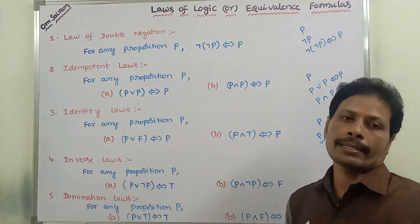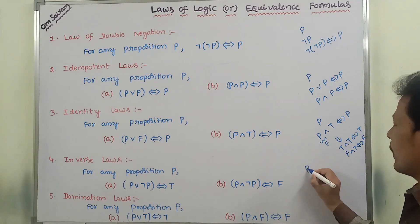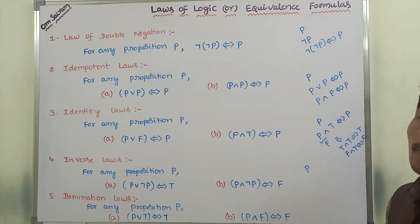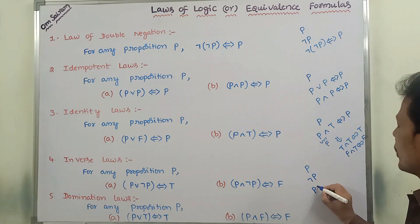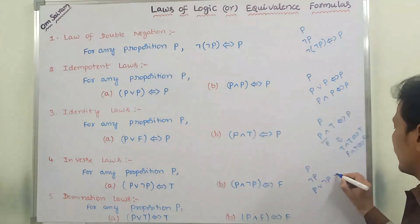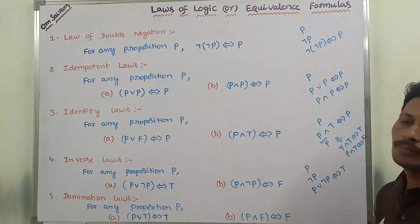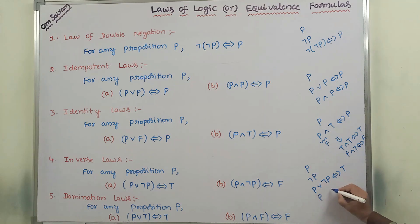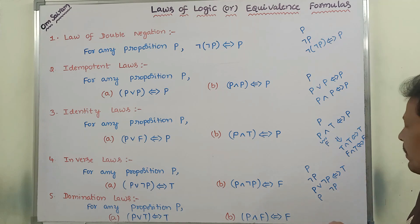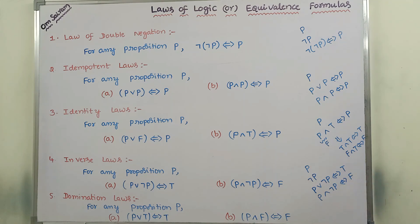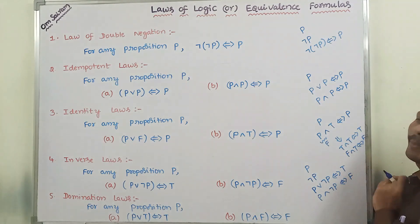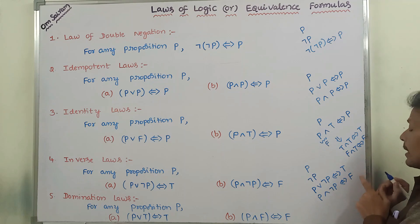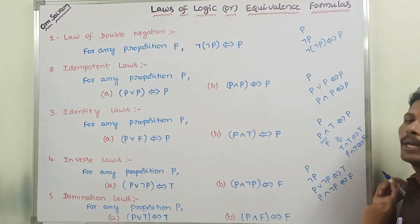The fourth one is the inverse law. We are taking proposition P. The inverse is nothing but negation, so we apply negation to get negation P. With the OR connective, P or negation P is always equivalent to true. With the AND connective, P and negation P is always logically equivalent to false. P or negation P is always logically equivalent to universally true, denoted by T. P and negation P is always logically equivalent to universal false, denoted by F.